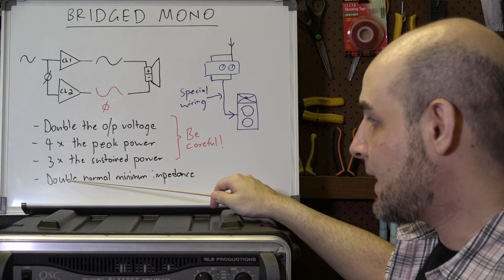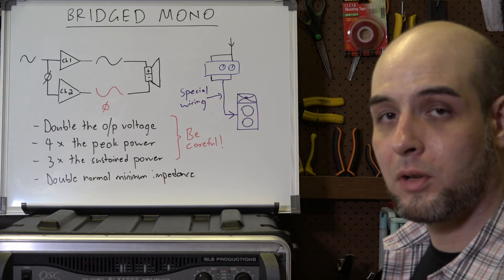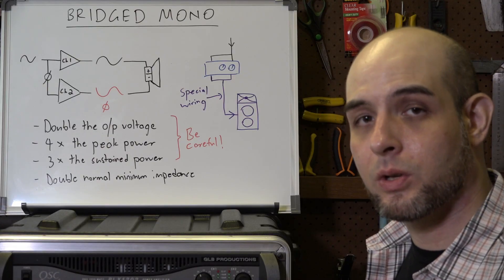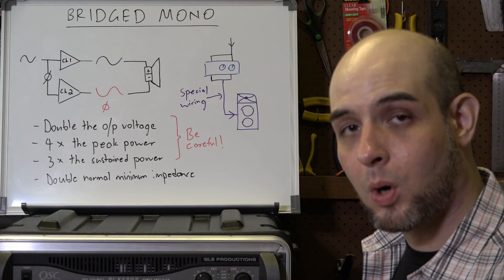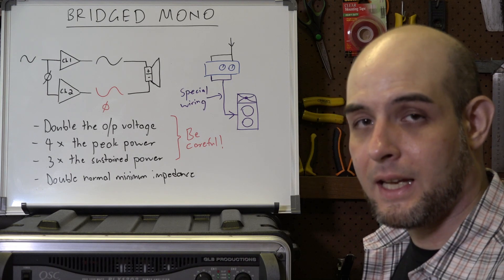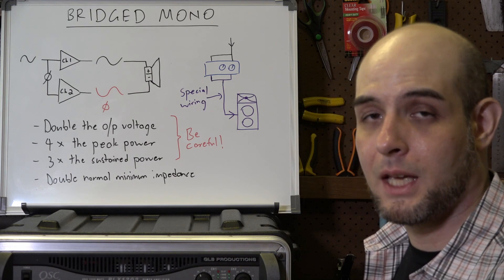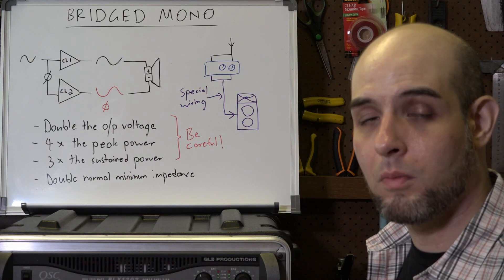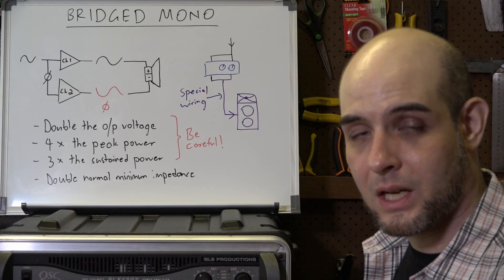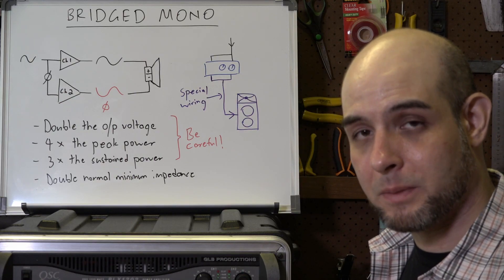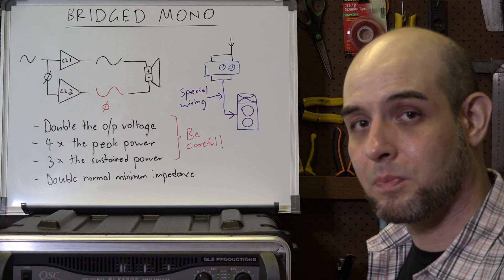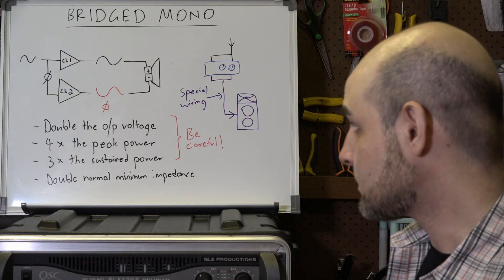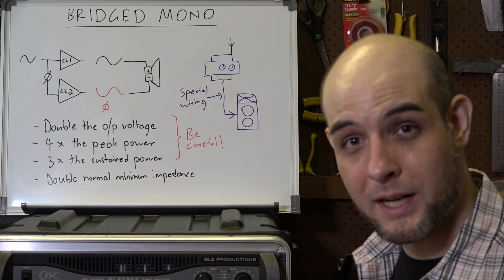The other important point is that you have double the normal minimum impedance in bridge mode. If the amplifier could normally run into two ohms per channel, in bridge mono you can only run it into a four ohm minimum load. The exact minimum load depends on your amplifier, so please consult the specification sheet.